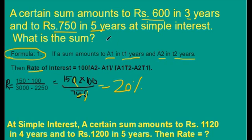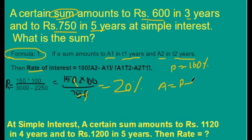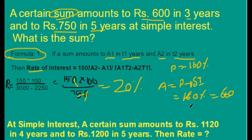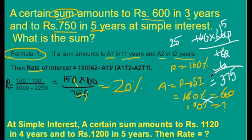The sum amounts to 600 rupees. We have to find the principal amount. We know amount equals principal plus simple interest. Principal is 100% and simple interest is 25% × 3 = 75%. Wait — the rate comes out to give us that 160% equals 600 rupees. We have to find 100%. By cross multiplication, the actual principal amount is 375 rupees. This is how we can solve these types of problems using this method.